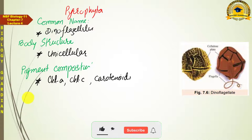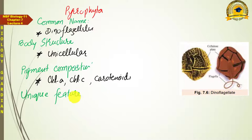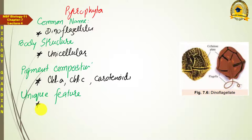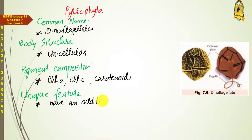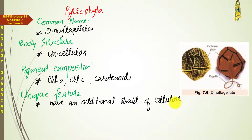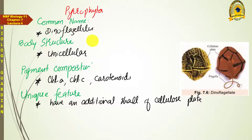Among the unique features of Dinoflagellates, in addition to their cell wall they have an additional covering — an additional shell made of cellulose plates. The flagella of Dinoflagellates emerge from gaps between these cellulose plates, through which they move. Due to the presence of flagella, they are considered Dinoflagellates.